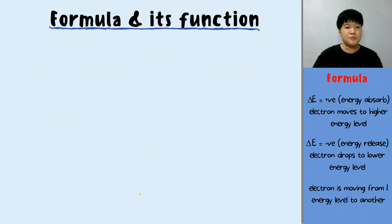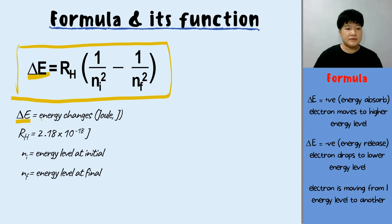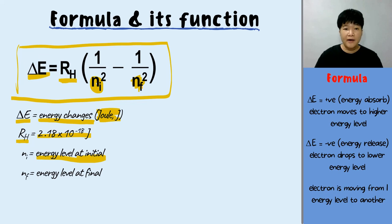Let's move on to the second formula. Delta E represents the energy change in joules. Rh is the Rydberg constant, 2.18 times 10 to the power of negative 18. Ni is the initial energy level and Nf is the final energy level — initial and final energy levels.